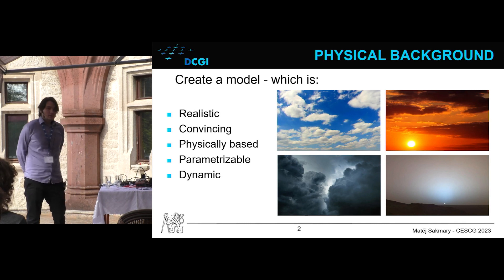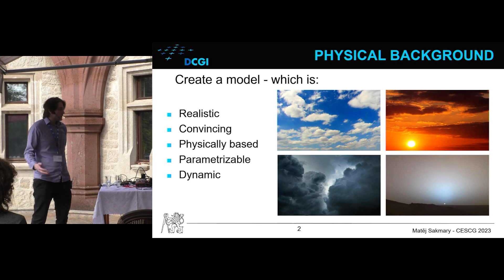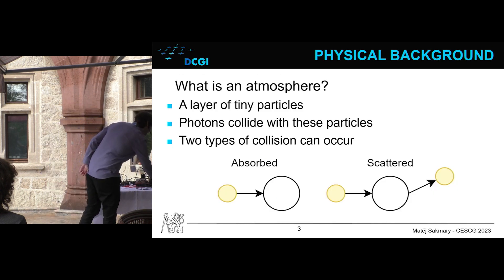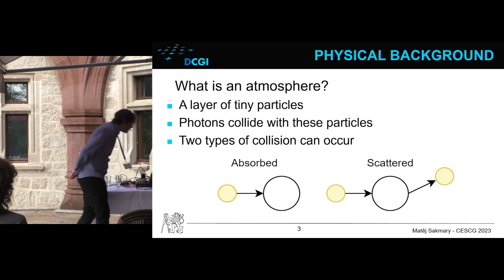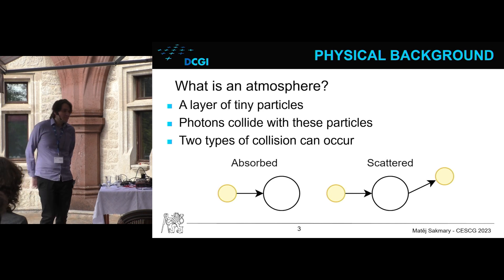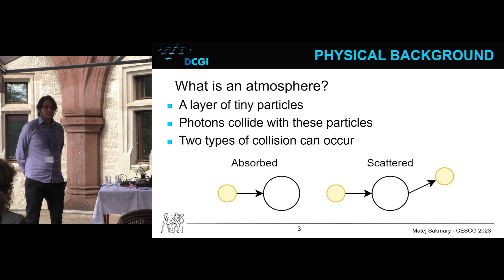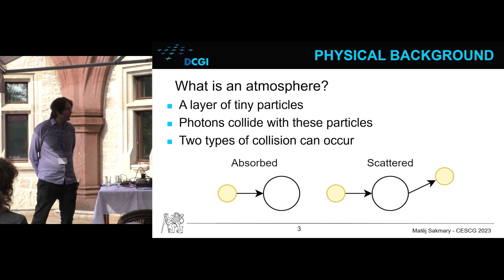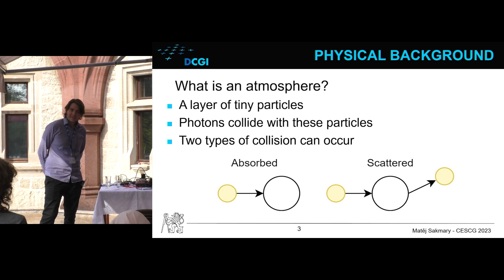The model also needed to be dynamic so that we could visualize the change in any of these parameters in real-time. Because we wanted our model to be physically based, I will now need to explain some of the physical laws that make up the visual look of the sky and atmosphere. But what actually is an atmosphere?